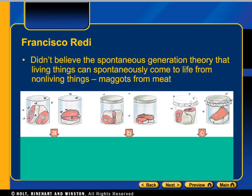He had experiments A, B, and C. In experiment A there was no lid. In experiment B there was a tightly controlled lid. In experiment C there was a net. Everything else was constant — the only thing different between experiments A, B, and C was the lid or lack of a lid. The same type of meat, the same type of jar, and the same amount of time for the experiment to take place.